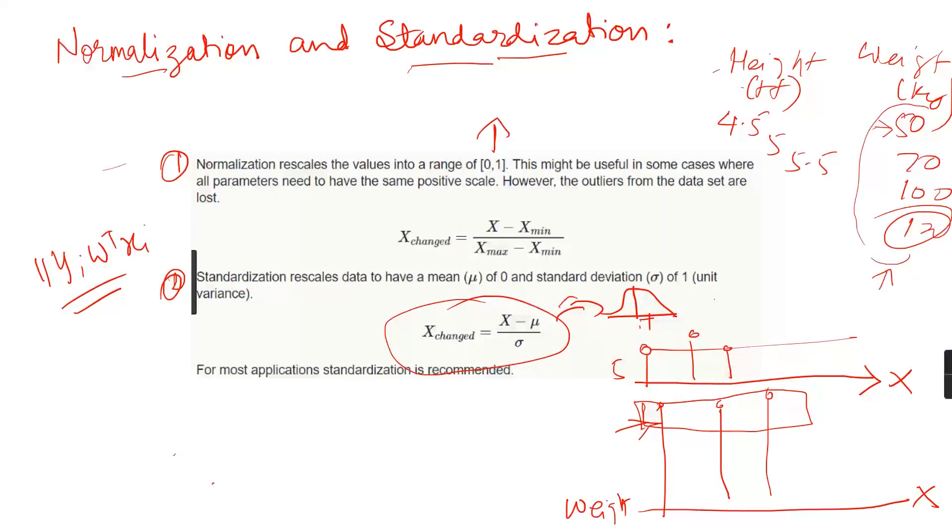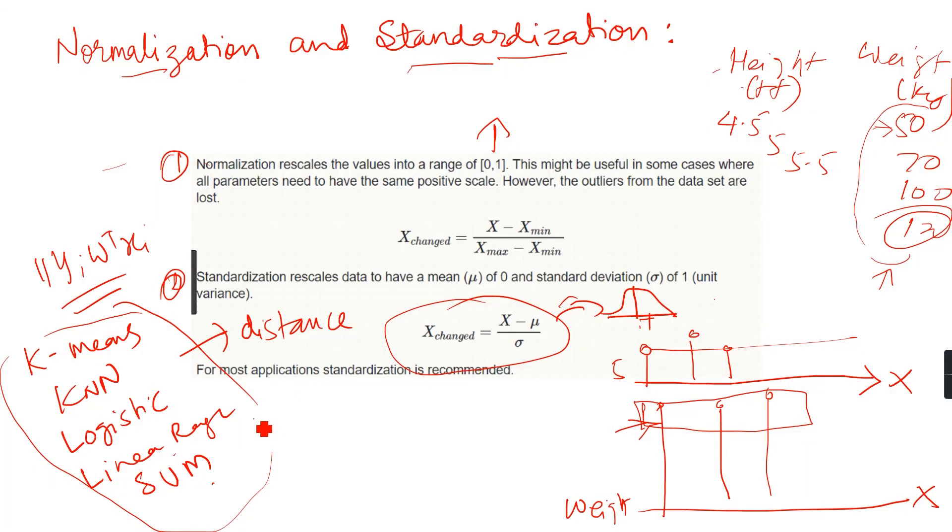In this video, you've understood why we need to normalize or standardize data. Any algorithm like k-means clustering, KNN, logistic regression, linear regression, SVM—all these machine learning algorithms work on distance principle using Euclidean distance and gradient descent optimizer.